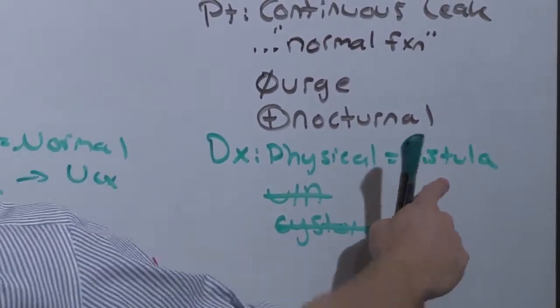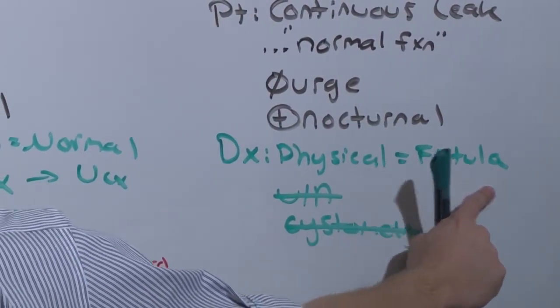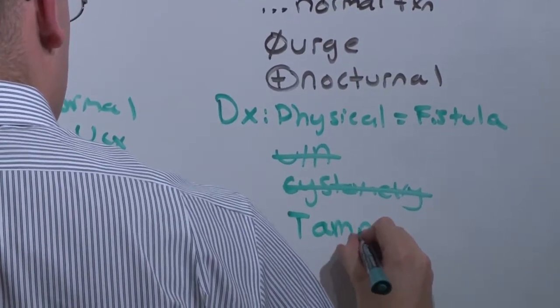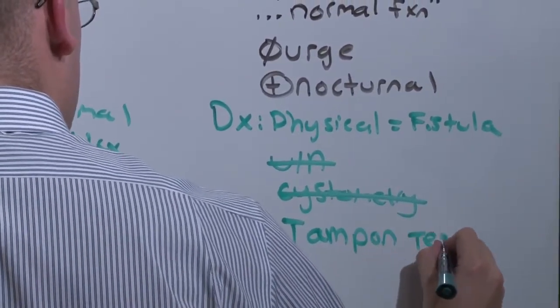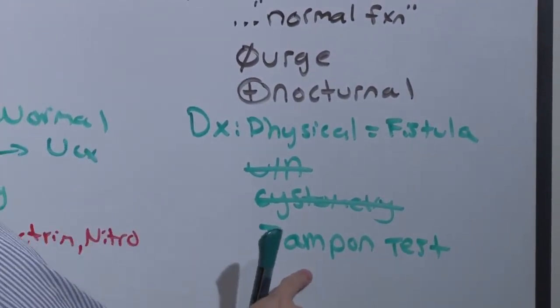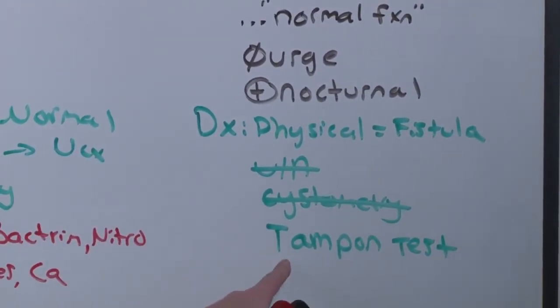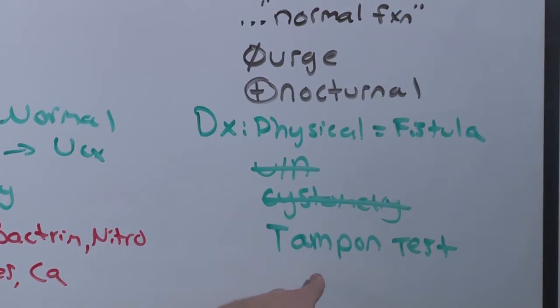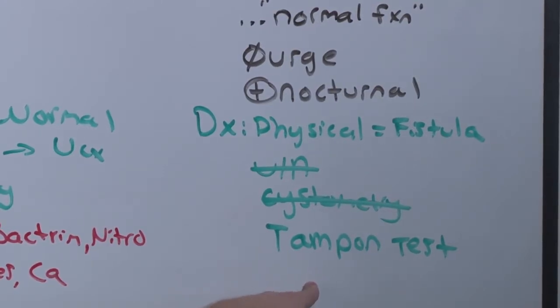But sometimes the fistula will be in the vagina or the rectum, which is very poorly accessible. So what you can do is the tampon test. You insert the tampon where you think the fistula is connected to. Then you inject a blue dye in through the urethra. There should be no connection between the bladder and wherever the tampon is. So if the tampon turns blue, you know that a fistula is present.